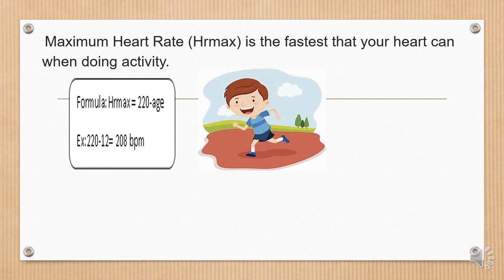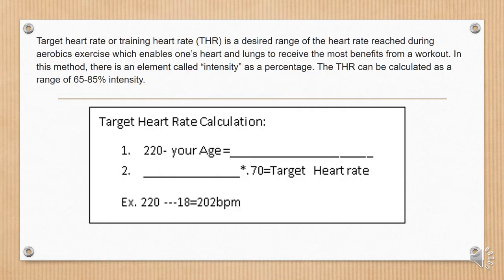Maximum heart rate (HRmax) is the fastest that your heart can beat when doing activities. Formula: HRmax = 220 minus age. Example: 220 minus 12 equals 208 BPM. Target heart rate (THR), or training heart rate, is a desired range of heart rate reached during aerobic exercise which enables one's heart and lungs to receive the most benefits from a workout. In this method, there is an element called intensity as a percentage. The THR can be calculated as the range of 65 to 85% intensity.